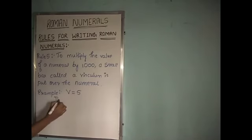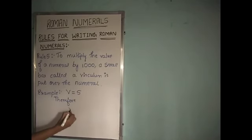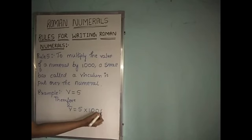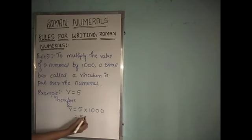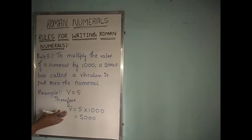Therefore, V bar is equal to 5 into 1000, which is equal to 5000. So, V bar is equal to 5000.